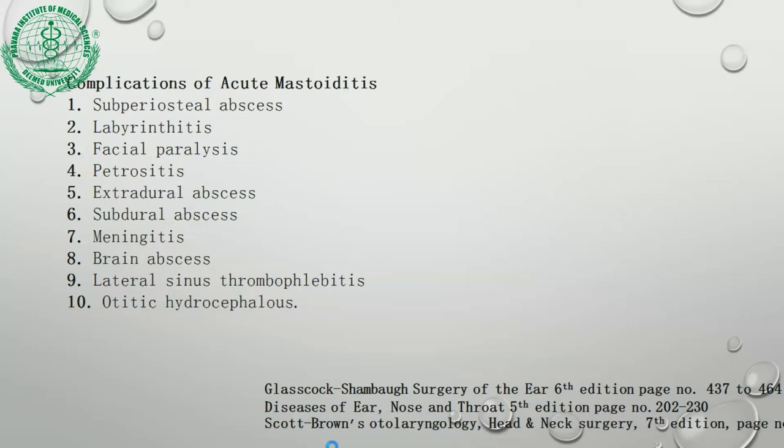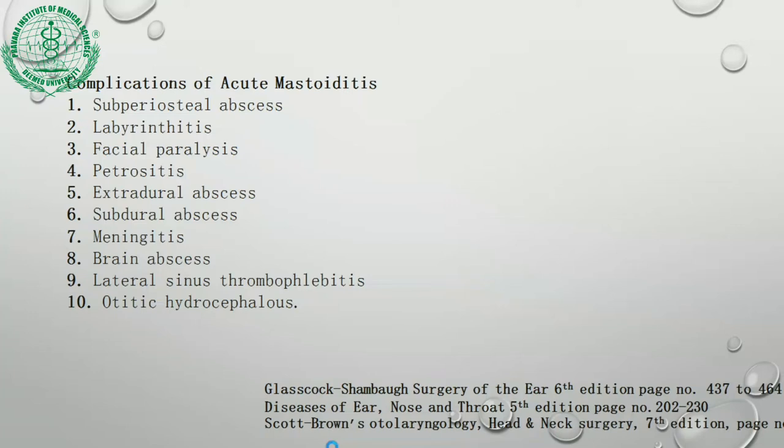Complications of acute mastoiditis include sub-periosteal abscess, labyrinthitis, fistula, extradural abscess, subdural abscess, meningitis, brain abscess, lateral sinus thrombophlebitis, and otitic hydrocephalus.